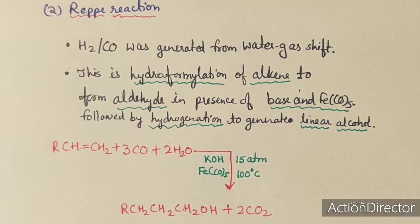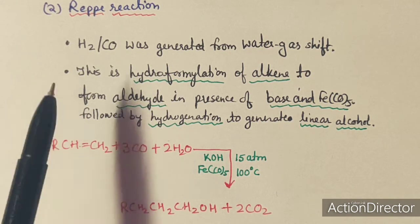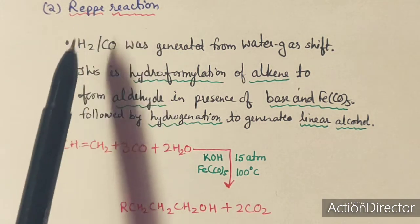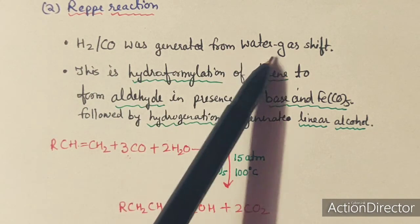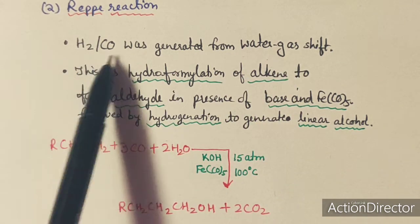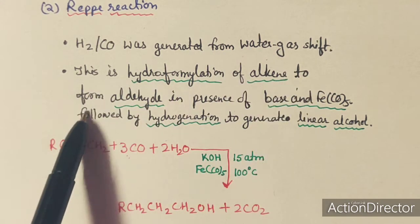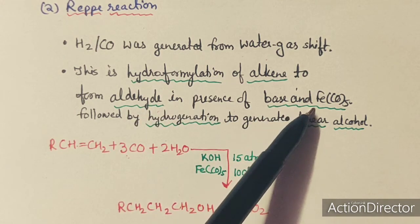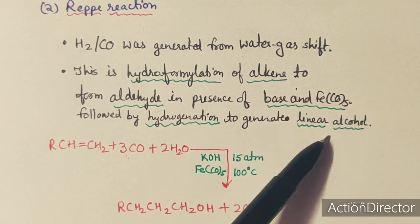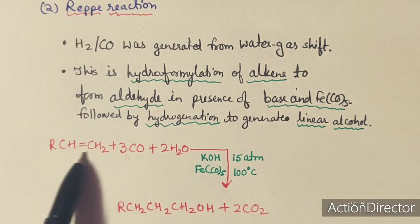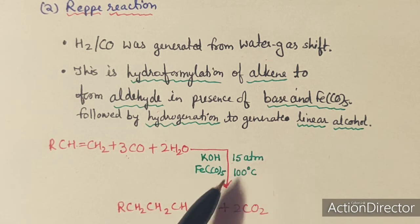Another kind of reaction that activates CO is the RAPA reaction — RAP synthesis. In this reaction, H2 and CO are generated from water gas shift. This is a hydroformylation of an alkene to form an aldehyde in the presence of base and Fe(CO)5, followed by hydrogenation to generate a linear alcohol using a transition metal complex.